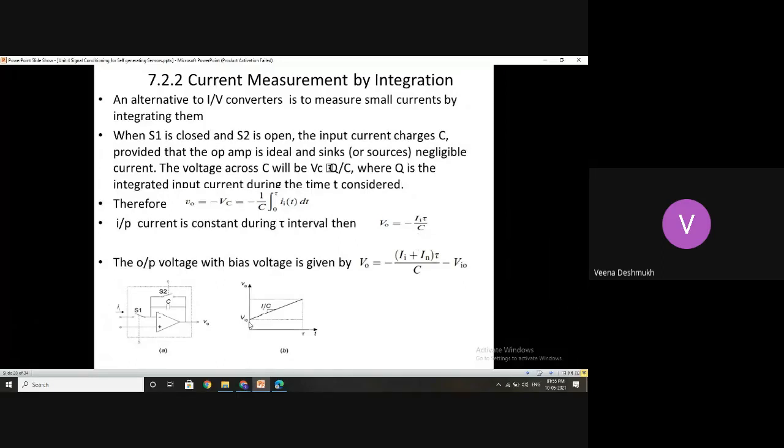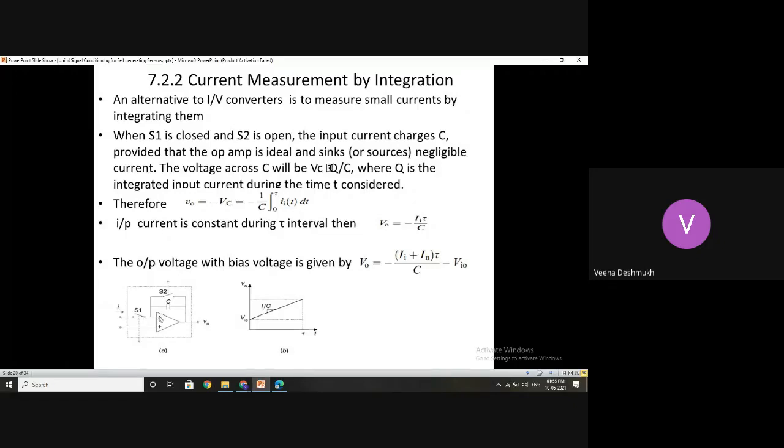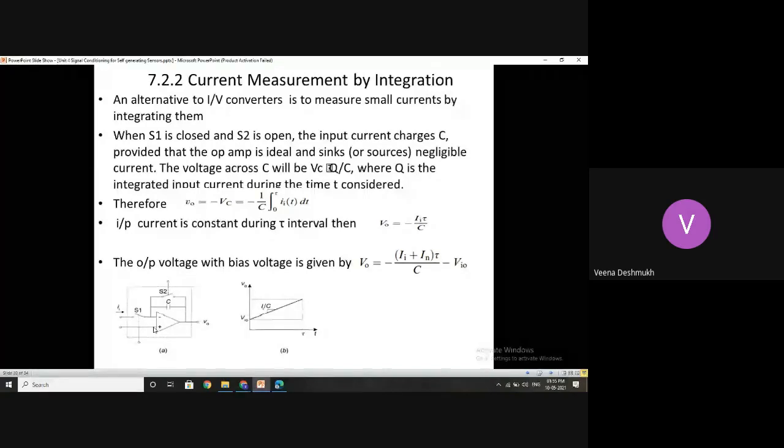Supposing there is input offset voltage, these two equations hold good when there is no input offset voltage. But in practical cases, if the input offset is not reduced to zero, under such cases, what is going to be our equation? This has to be subtracted from the output. Simply what we are doing, the output voltage is equal to II plus IN. Here it is connected to the inverting terminal and inverting terminal has the bias current IN. So these two currents are added, II plus IN.